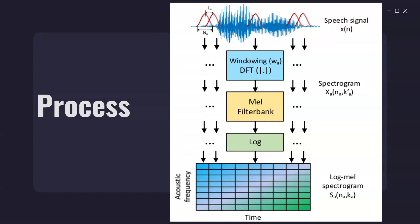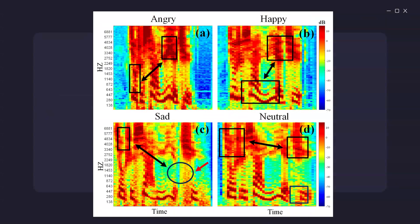Sometimes we also convert the Mel spectrogram to a logarithmic scale for better visualization, which can be done using the matplotlib library. That helps us for a better interpretation of the Mel spectrogram.